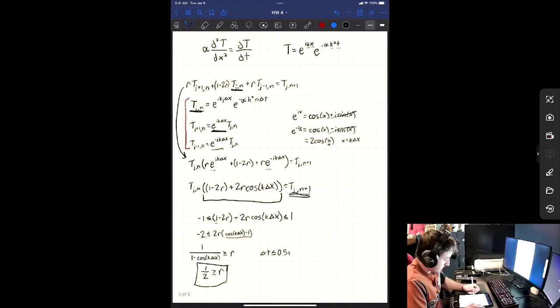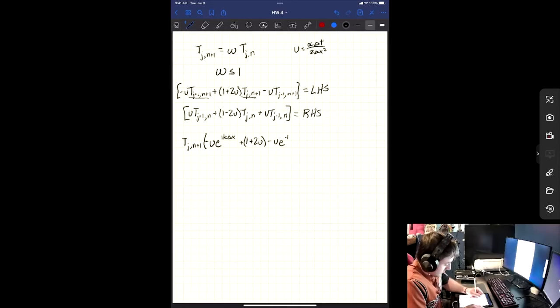And for this last term, it's u, and then this is j minus 1. And that is given by this. And so we can do e to the negative i k delta x here for that. And then this is our left hand side.